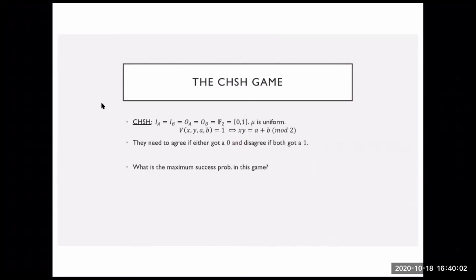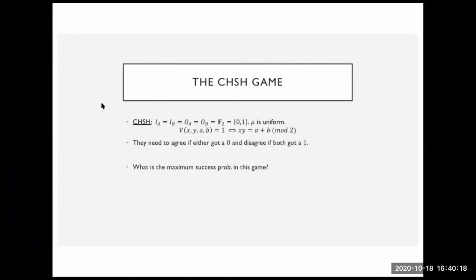This is a very simple game with a uniform distribution, only bits, and this winning predicate is quite easy to understand in English: they need to agree on their answer if either of them got a zero, and they need to disagree if both of them got a one.